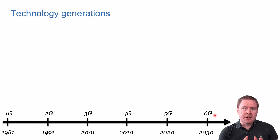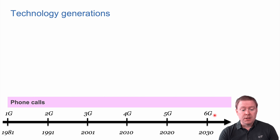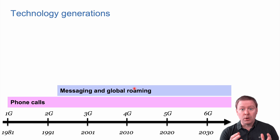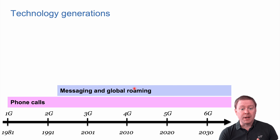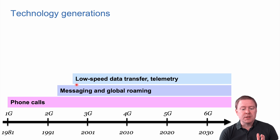Apart from changing the technology itself, what we use the technology for has also been increasing over the years. We can still make phone calls — that was the original service. But already from the 2G era, we added messaging and global roaming using the same technology and devices worldwide. That is also why it's important to have a global standard. Then we started with some low-speed data transfer.